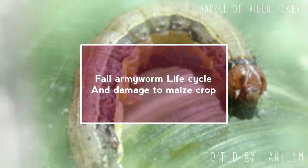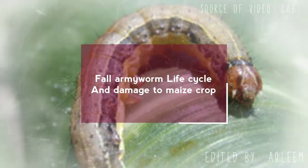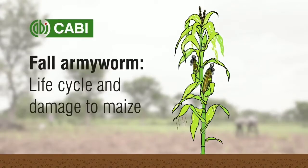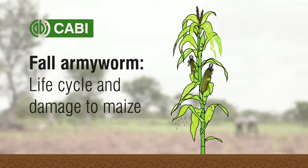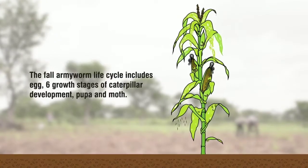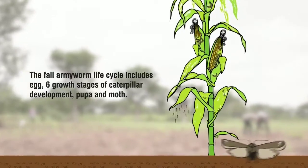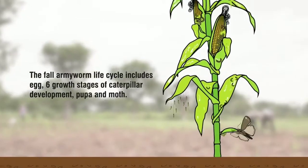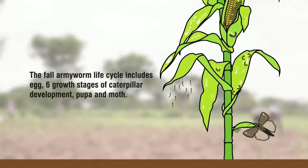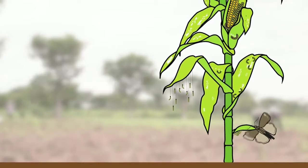Fall armyworm life cycle and damage to maize crop. The fall armyworm life cycle includes egg, six growth stages of caterpillar development, pupa and moth.